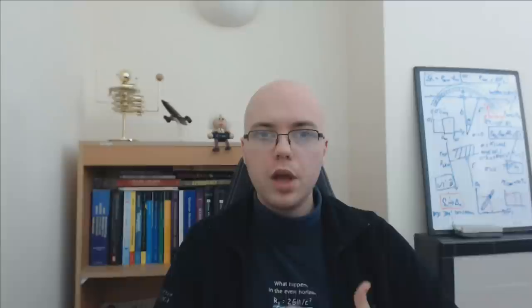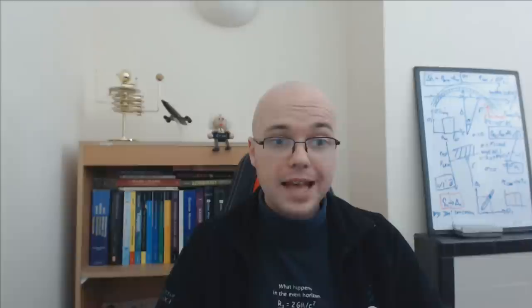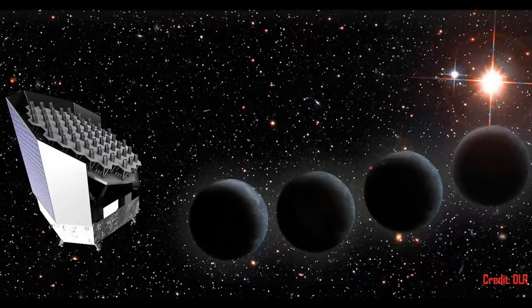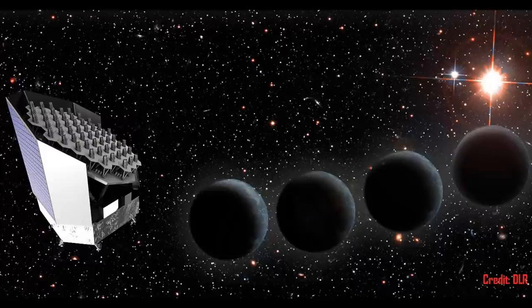TESS probably won't be that good for observing exomoons either. Perhaps the next best chance will be with the European Space Agency's PLATO mission when it launches in 2024, which nominally has a two-year mission — hopefully going much longer. PLATO is designed to be like a super-Kepler, producing an incredible census of nearby transiting planets. It won't characterize them — that will wait for future missions — but it will be an incredible detection mission. In short, PLATO may be our best bet to look for exomoons.